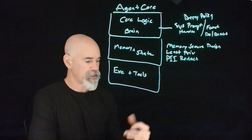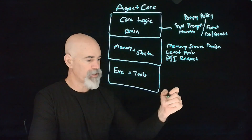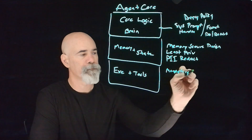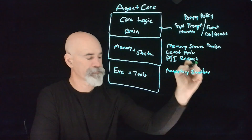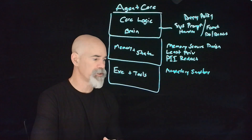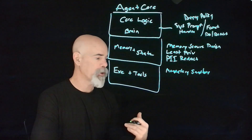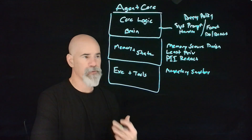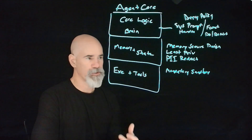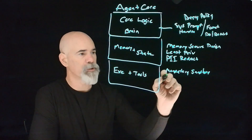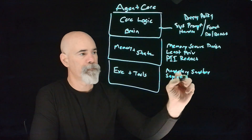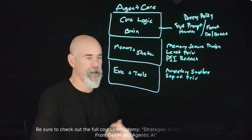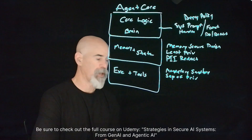The last thing we'll look at here is execution and tools. We want to make sure that we have mandatory sandboxing, which ensures that all tools are executed and generated code runs within a sandbox. This means we're able to contain any kind of potential harm and prevent access to underlying host systems. The next thing is making sure that we have a separation of privilege — designing the agent so that high-privilege operations are handled by a separate trusted process rather than the LLM's direct control.